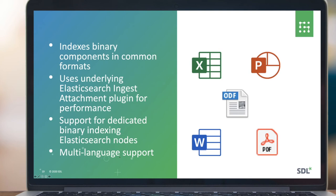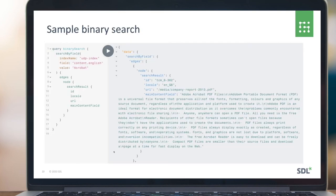Multi-language support is also supported here — content coming from different language results will be put into the appropriate fields. Here's an example of a binary search using one of the standard search root queries. In this case, searching for an Adobe Acrobat PDF file, you can see the results come back with the content of the file and a URL pointing to the location of that PDF on that component. You can see it's being stored in content-english because it has an English GB locale on the component.